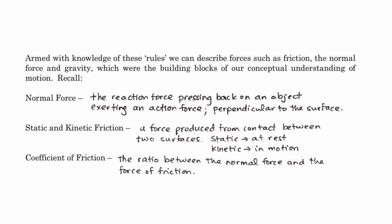Different surfaces experience different forces of static and kinetic friction. Certain things experience very little friction — perhaps a puck on ice — and certain things experience a lot of friction, such as non-slip shoes and tiles in fast food restaurants. Some places we want high coefficients of friction so we don't slip; others we want low coefficients so things do slip. We use mu_s for static friction and mu_k for kinetic friction.